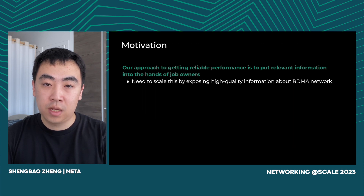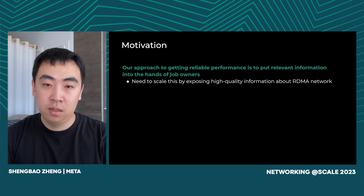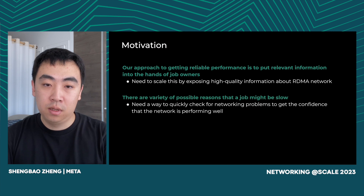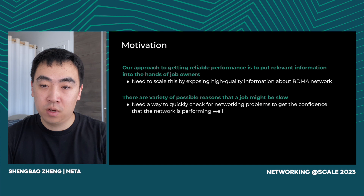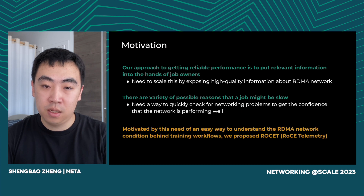Our approach to getting reliable performance is to put relevant information into the hands of job owners, so we need to scale this by exposing high-quality information about RDMA network. Since there are a variety of possible reasons that a job might be slow, we need a way to quickly check for networking problems to get the confidence that the network is performing well. Motivated by this need of an easy way to understand RDMA network condition behind training workflows, we propose ROCKIT.